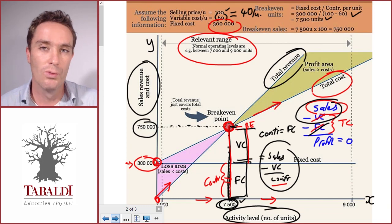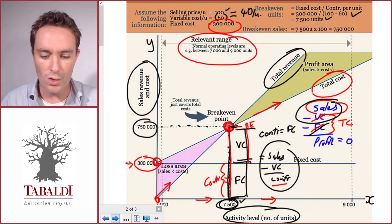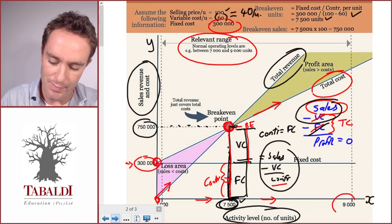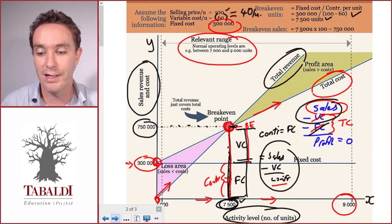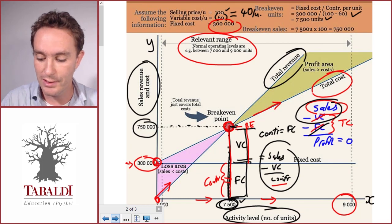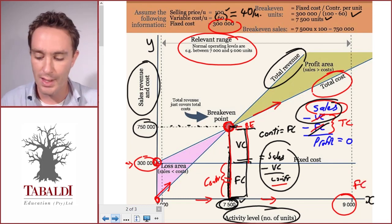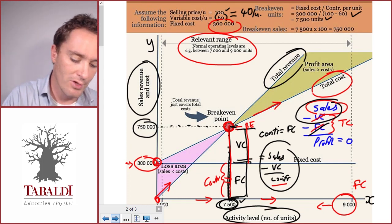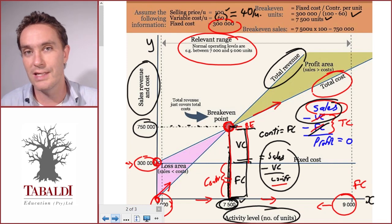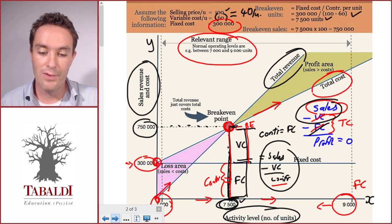In this case, let's assume it's between 7,000 and 9,000 units. That's usually our normal operating levels or operating capacity. If we go above 9,000 units, we might exceed our manufacturing capacity and we need to incur additional fixed costs. Below 9,000, we're within capacity so our fixed cost stays fixed.